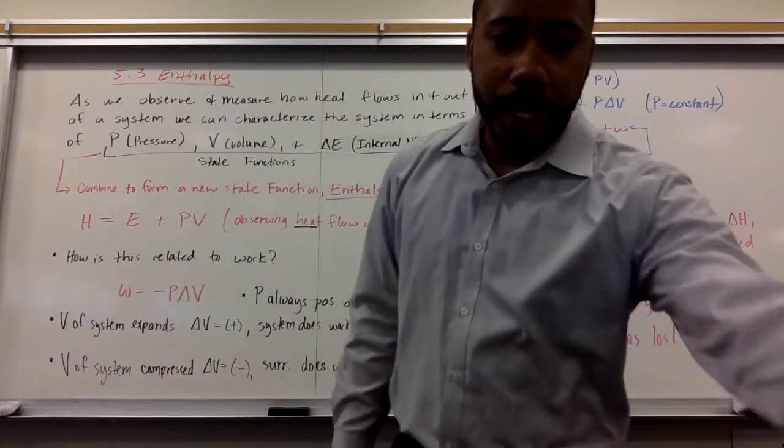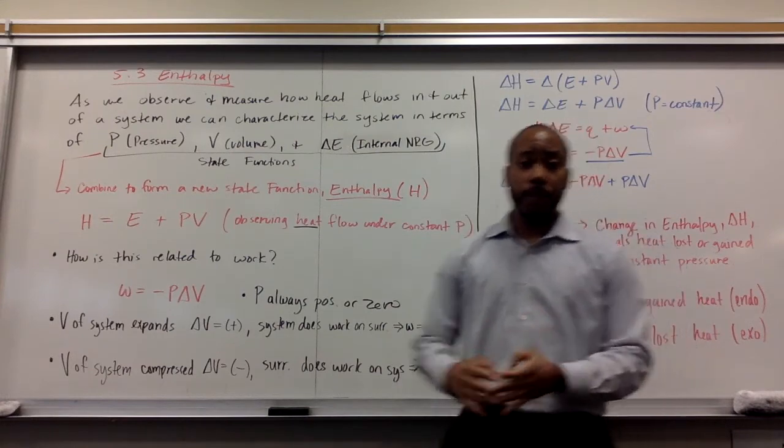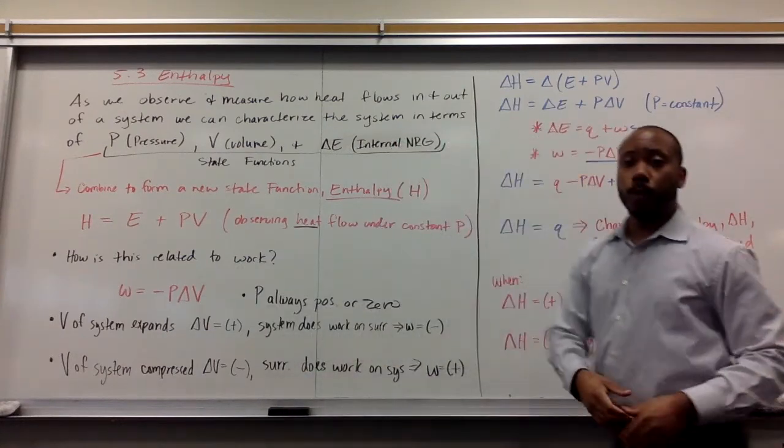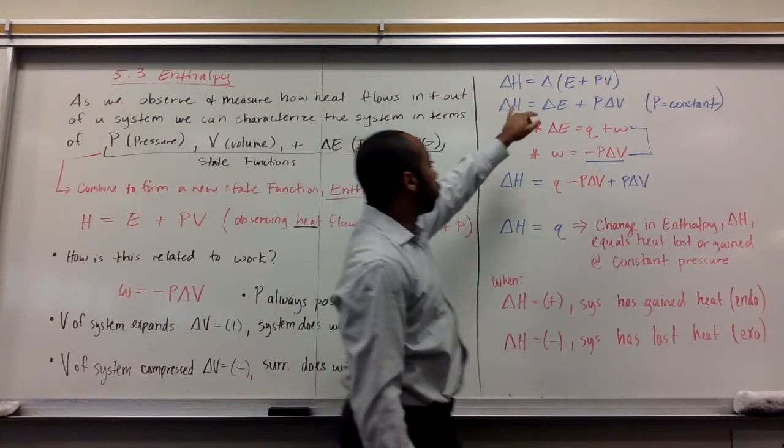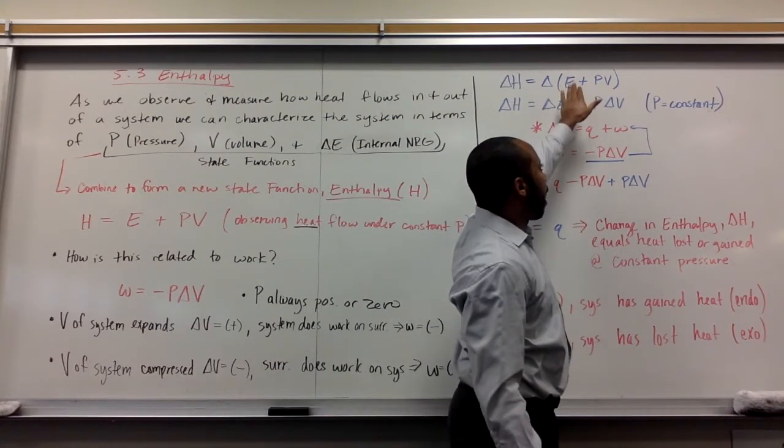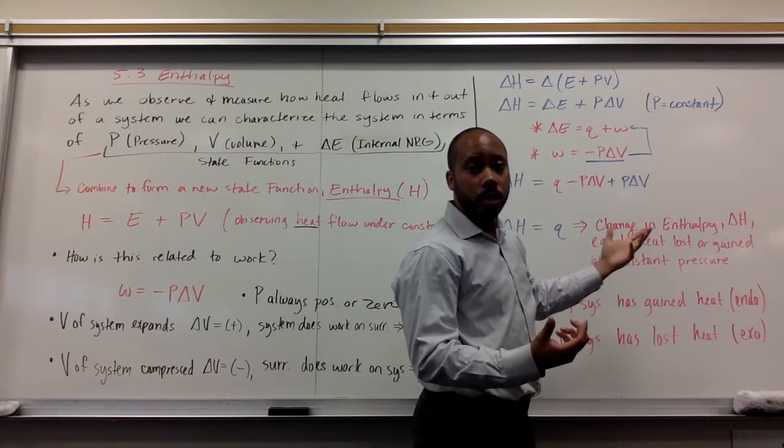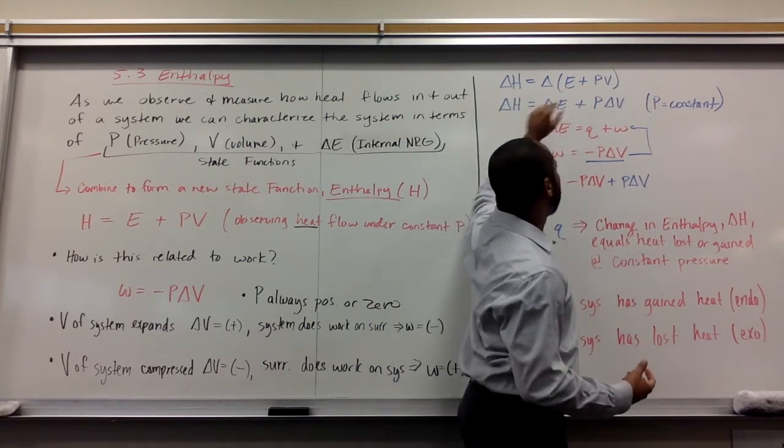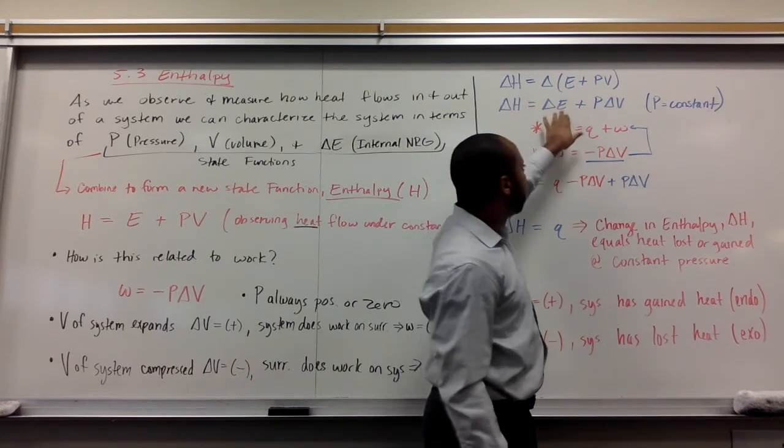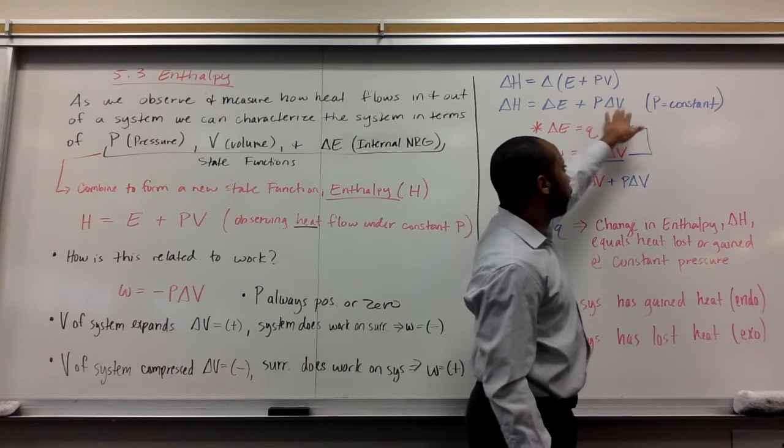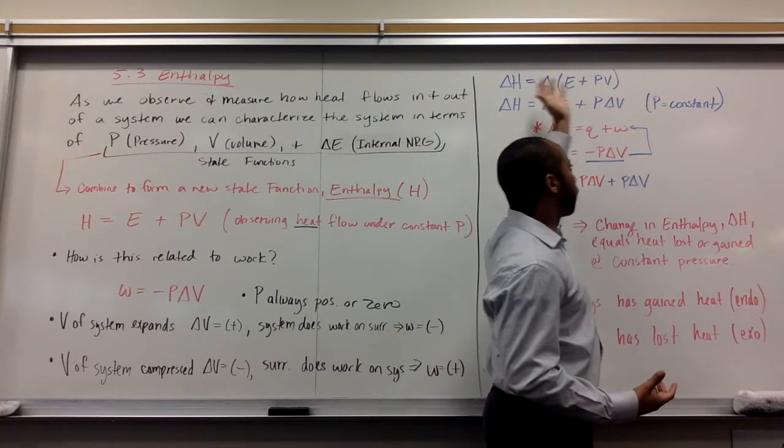Now, since enthalpy is a state function, all we really care about is how enthalpy changes from beginning to end. So we care about delta h. Delta h is equal to, we also care about how e changes and how p and v change. If we put deltas here, delta h equals delta e plus p times delta v. Since p is constant, it doesn't get a delta, it doesn't change. So we just take the delta off of that.